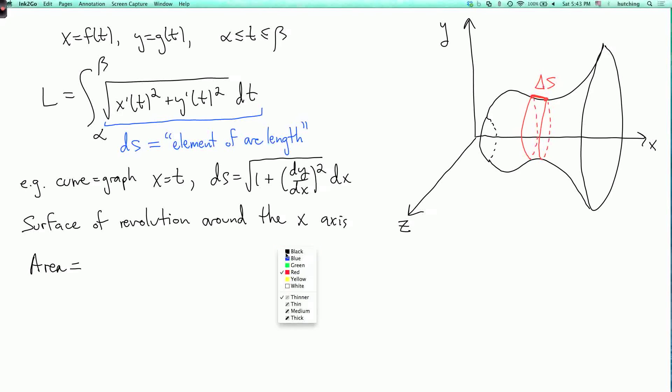And we can define the area to be the limit as the length of these segments, delta s, goes to zero of the sum of the areas of these ribbons.